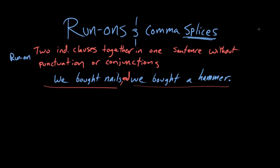In our case, for grammar, a comma splice is an inappropriate joining of two independent clauses by using a comma.